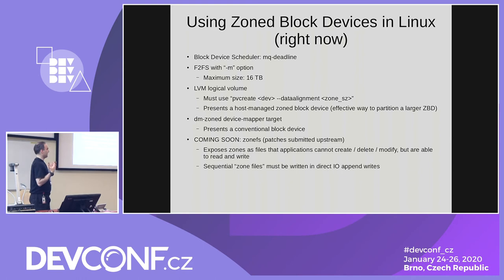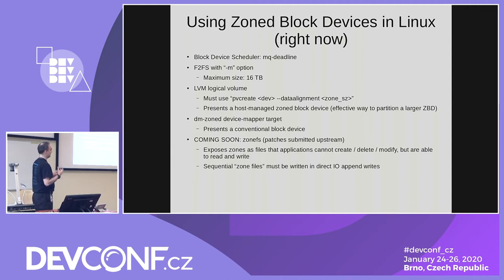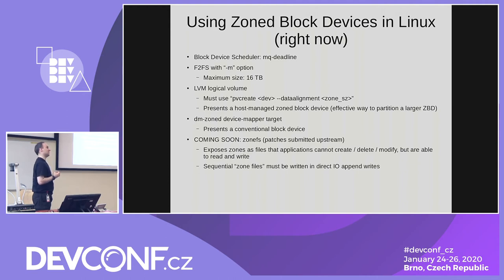So how can you use zone block devices in Linux right now with, say, the 5.3 or 5.4 kernel? The optimal time for zone block devices has been around the 4.17 to 4.18 kernel, when the scheduler changes were in so the scheduler was able to use it and set up everything else. You should use MQ deadline for the scheduler — that's the only scheduler right now that understands the write restrictions for the zones. One of my first issues was when Damien asked me if I was using the deadline scheduler, and I said no, and then I found out because that's the only scheduler that understands the limitations.